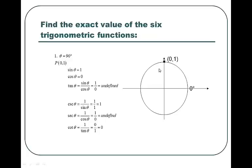Here's a little heads up: whenever you're dealing with the quadrantals — 0, 90, 180, 270, 360 — when you're looking at the six trigonometric functions, 2 will always be undefined, 2 will always be equal to 0, and the other 2 will be equal to 1 or negative 1, depending on which quadrantal angle you're at.